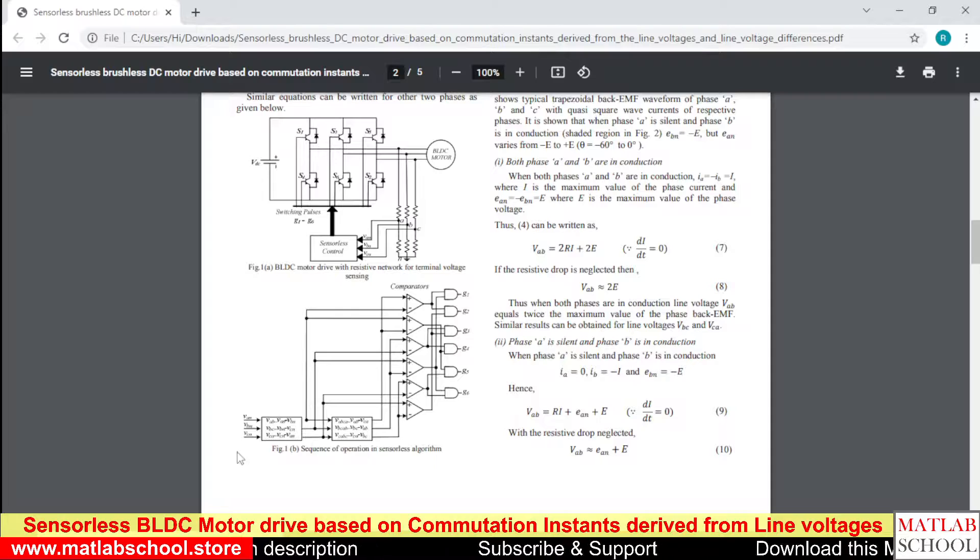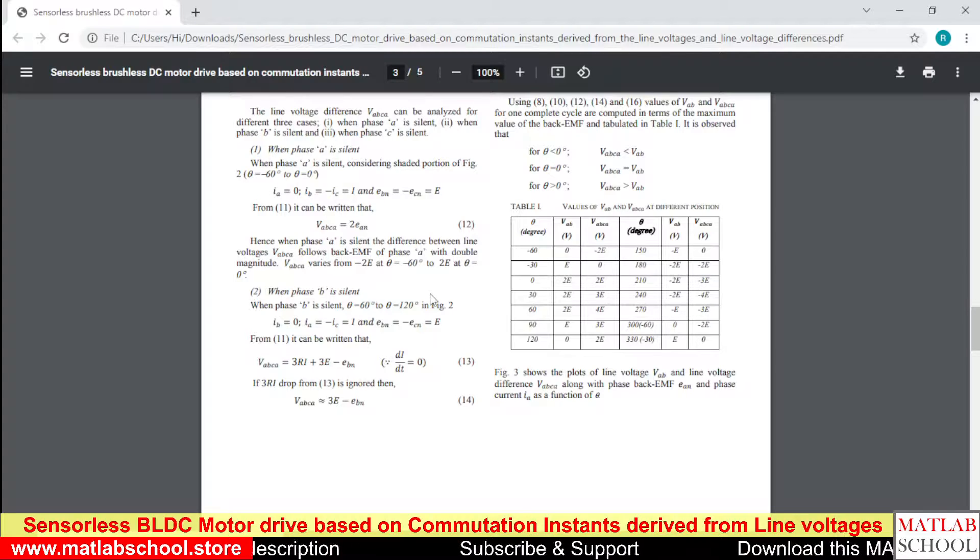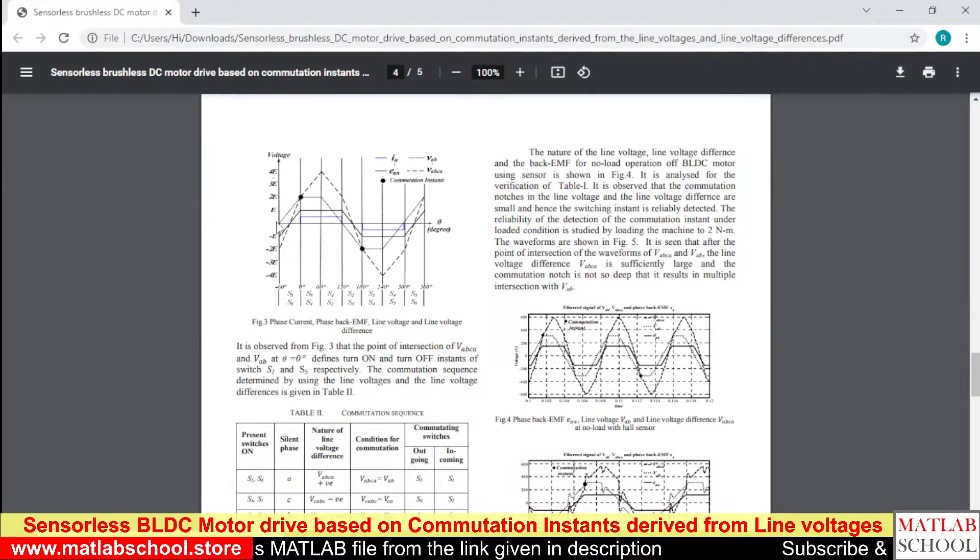Here we have the line voltages and the difference of line voltages are computed. Then the difference of these two things will be compared using a comparator. And the output of comparator is given to the gates. So these are the different degrees of operations of BLDC motor. As you can see we have different voltages available at different line voltages. Here we have the line voltage and also we have the difference of line voltage. So the crossing point of these two voltages will be the commutating point. This is the point where the commutation happens.